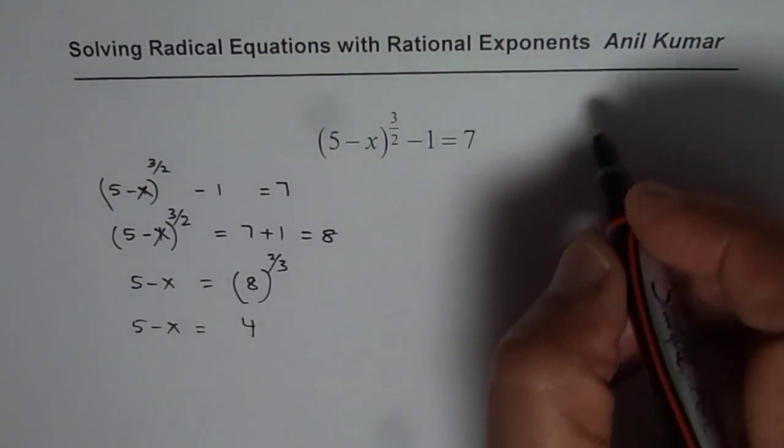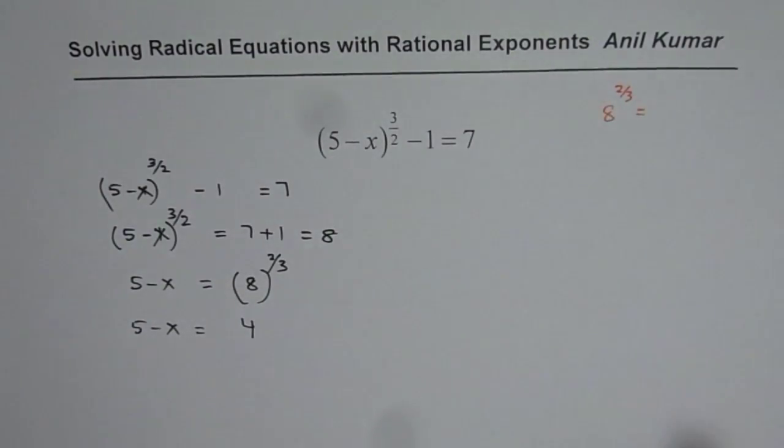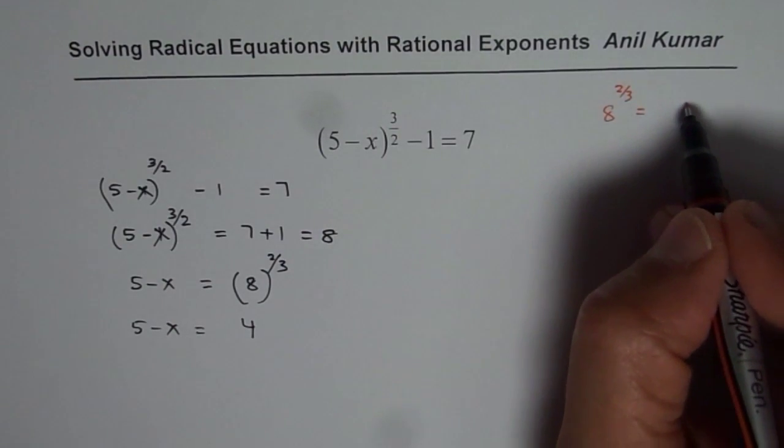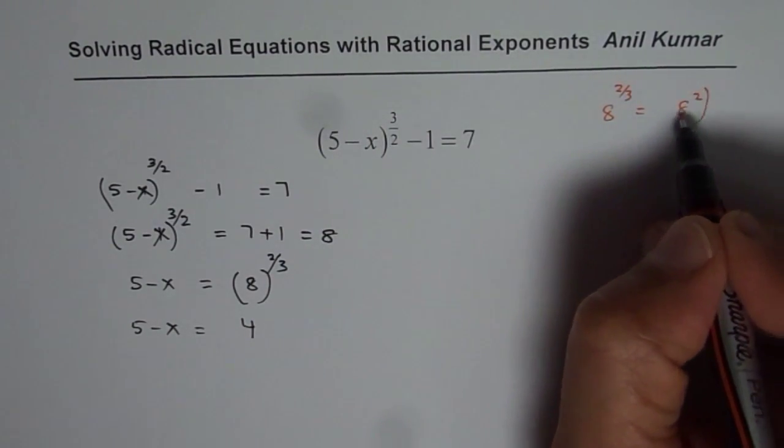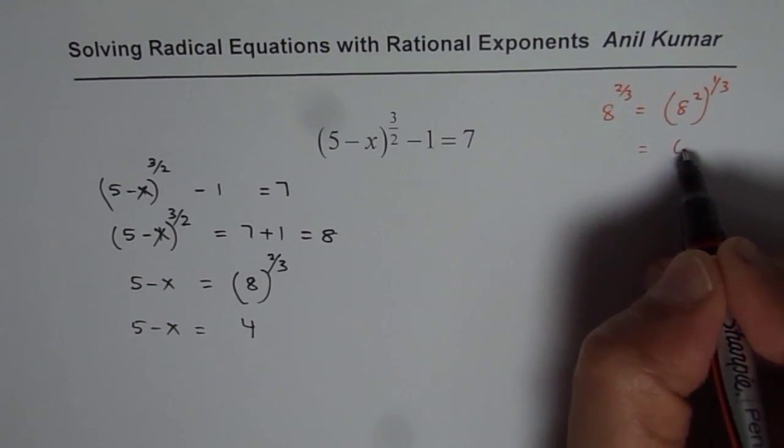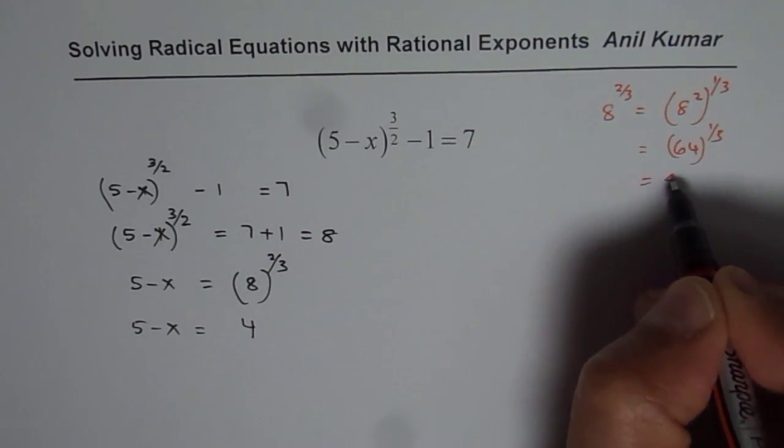Let me do this separately. You have 8 to the power of 2 over 3. You could either square and then cube root. So if you square, you get 64, then cube root of 64, which equals 4.